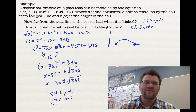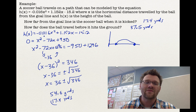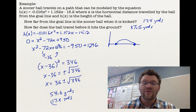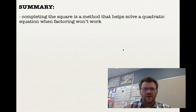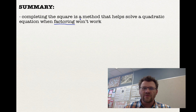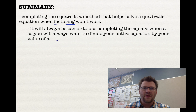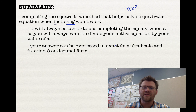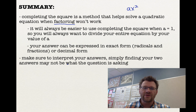Don't get nervous when decimals are involved — just follow the same process. Always make sure there's a 1 in front of x squared, so divide everything by the value of a first. In summary: completing the square is a method for solving quadratic equations when factoring won't work. It's always easier when a equals 1, so divide your entire equation by a. Answers can be expressed in exact form — radicals and fractions — or in decimal form. Make sure to interpret your answers, because simply finding two values may not answer the actual question, as in our last example.